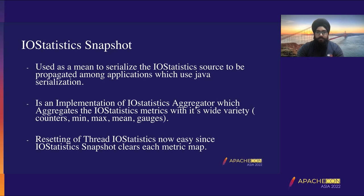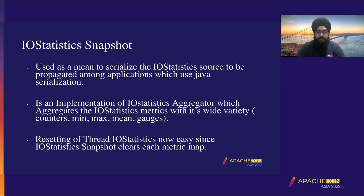In IOStatistics snapshot we also have the ability to reset. Imagine a worker thread working on a particular task — if a new task comes up requiring the same worker thread, we would be aggregating the old work as well, which is what we don't want. For each execution cycle in an application, it's really important to reset these stats and aggregate them at the proper points.